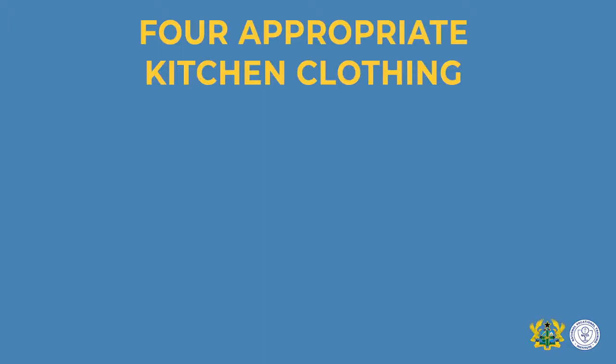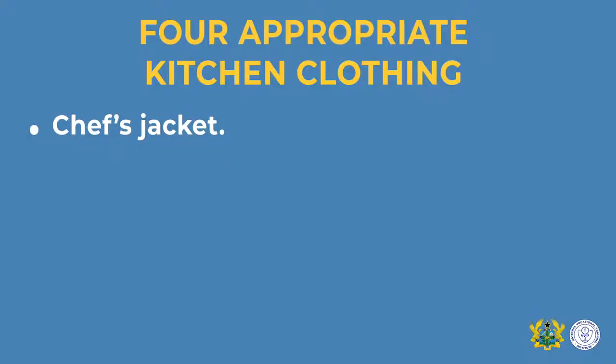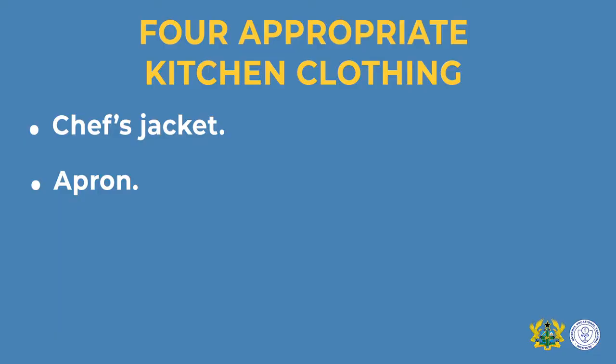Let's look at four appropriate kitchen clothing items. 1. The chef's jacket must always be durable and able to withstand wear and tear. The prescribed colour is white, and you need to wash it after each day's activity. 2. The apron should be of good length — it shouldn't be too short. It should reach your knee so that it will prevent heat from getting into direct contact with your body during cooking. 3. The chef's hat prevents hair from falling into your food during cooking and also prevents germs — if your hair is itching and you touch it, you don't transfer germs into the food.